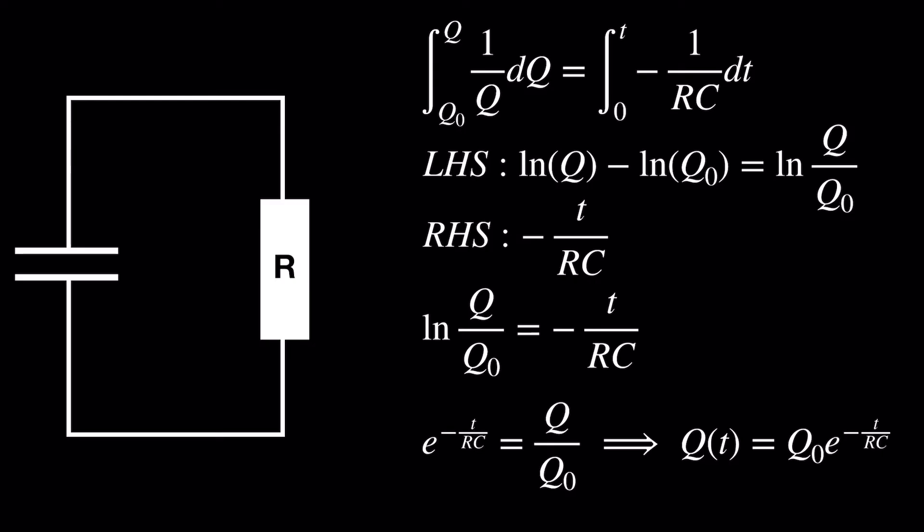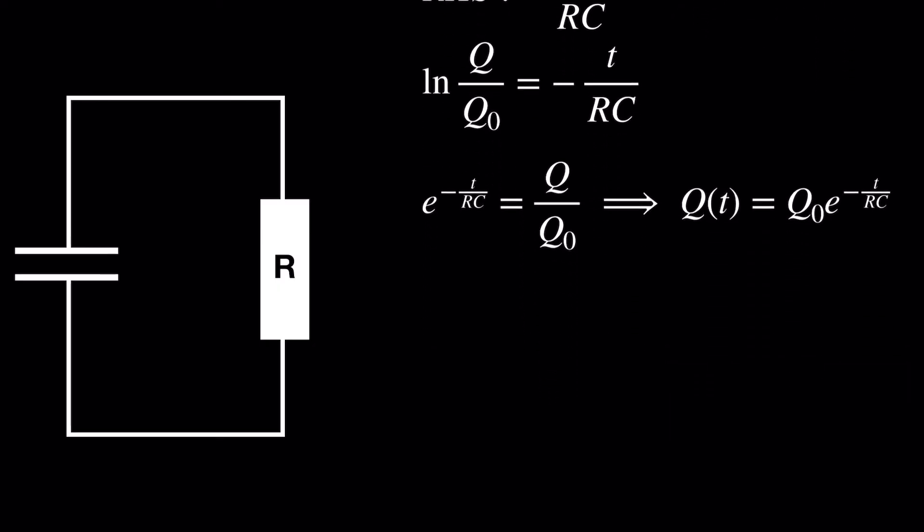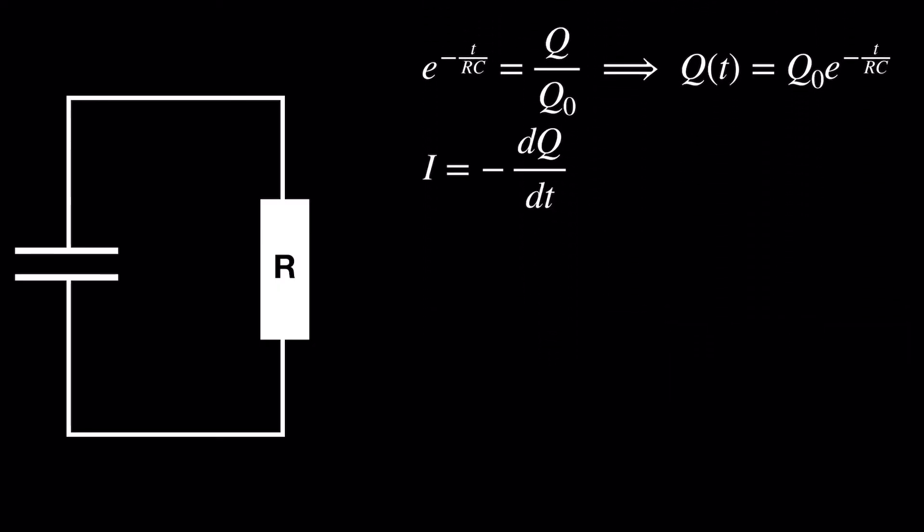So that's our first equation. The current equation very much drops out of this one. We're going to once again use the fact that i equals negative dQ by dt. So all we have to do is take the derivative of the first equation using the chain rule, and then take the negative of both sides in order to substitute our current in.